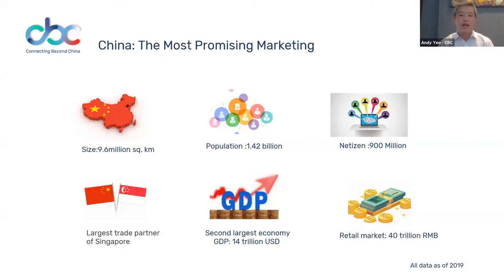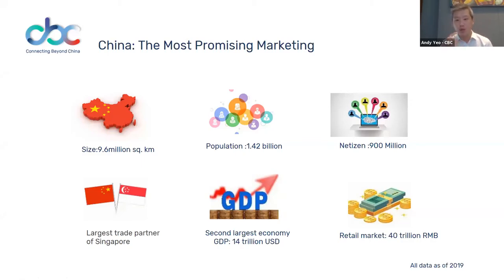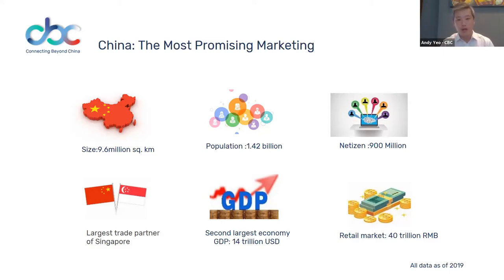As many of you know, China is a big domestic market — the second largest economy in the world with 14 trillion US dollars. With a population of 1.42 billion, what's particularly interesting is the number of internet users: close to 900 million people are buying and selling online. To many MNCs, it is a market of huge potential — both for sales and for production aspirations to become a world leader. Importantly, China is currently the largest trade partner of Singapore, and we are looking at how to help companies connect better between Singapore and China.